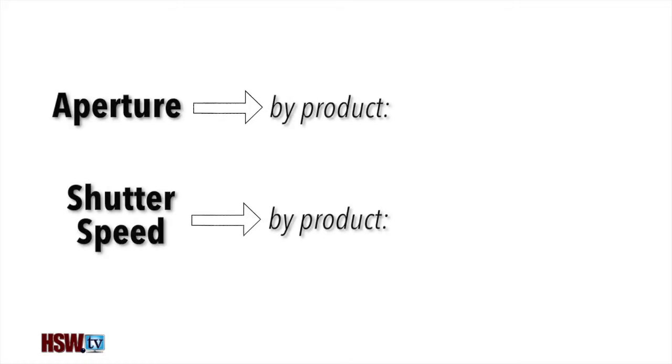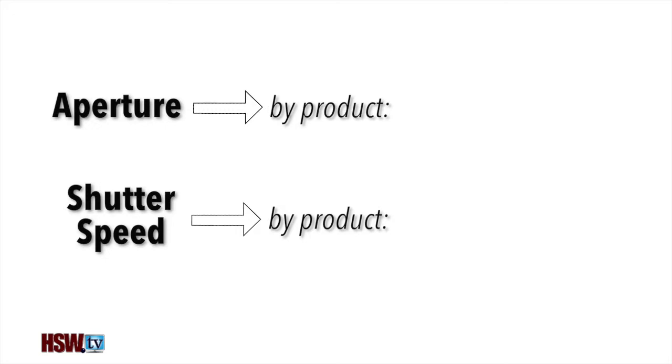When you change your aperture and shutter speed, aside from changing the exposure, you are also changing two visual effects that are byproducts of the aperture and shutter speed: depth of field connected to the aperture, and motion blur connected to the shutter speed.